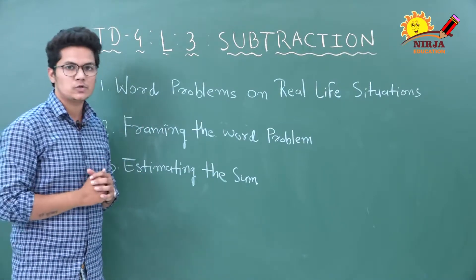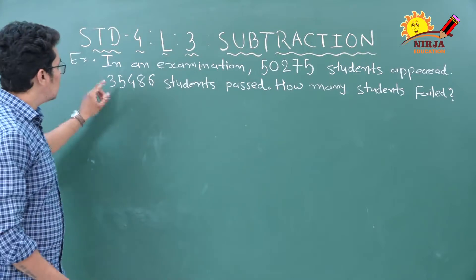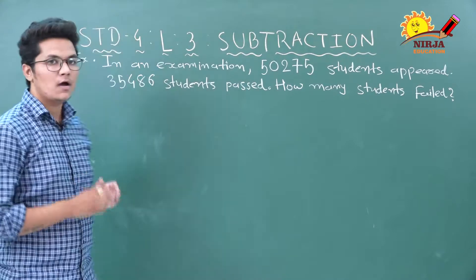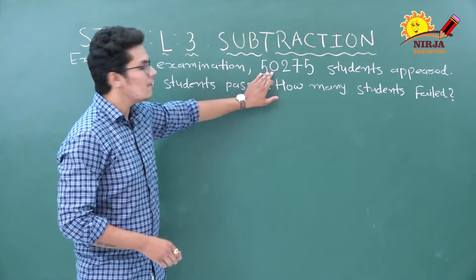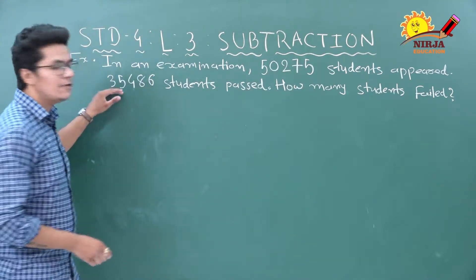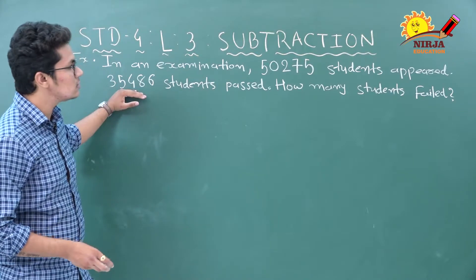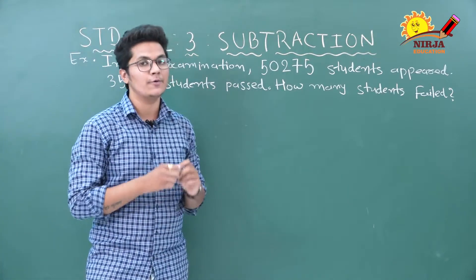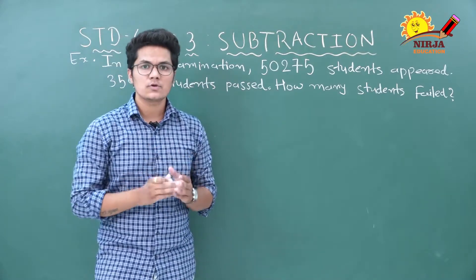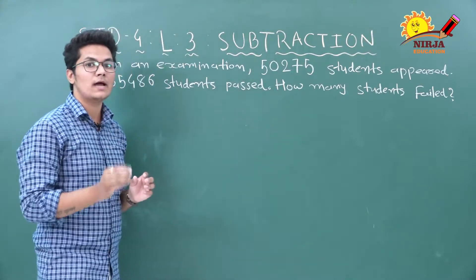Let's start with our first topic. In an examination, 50,275 students appeared and 35,486 students passed. How many students failed? Some students find it difficult to solve a word problem, but follow these steps so that you can overcome that difficulty.